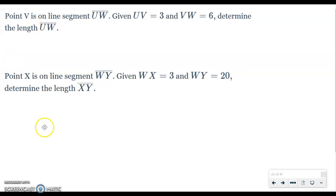Alright, so here we have two problems. We'll start with the first one. Point V is on line segment UW. Given UV equals 3 and VW equals 6, determine the length of UW.